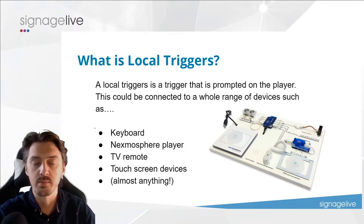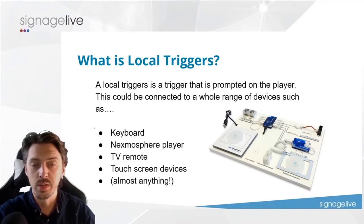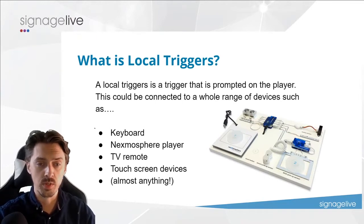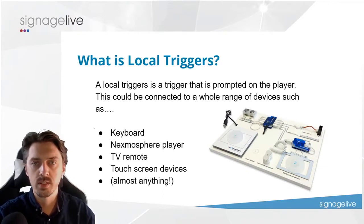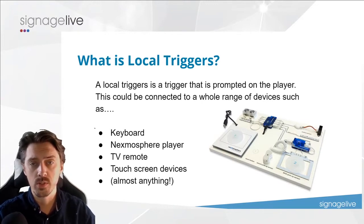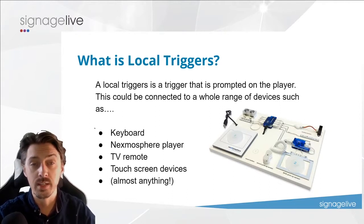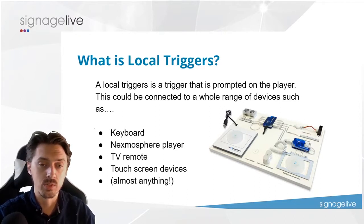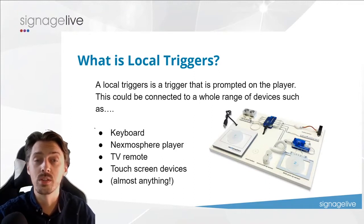Nexmosphere is another option — you can see the Nexmosphere device on the right-hand side of your screen. Nexmosphere offers a whole range of different ways to interrupt content, whether it be a button push, a lift-and-learn, RFID, or something built into a product or display item. You lift it and it triggers that content, or you push a button and get content relevant to an image associated with that button.